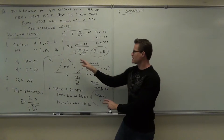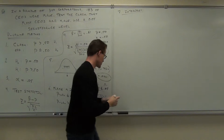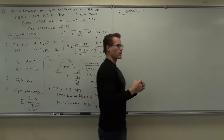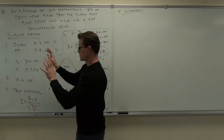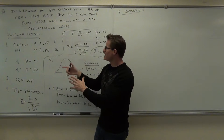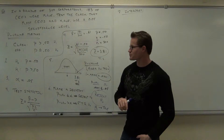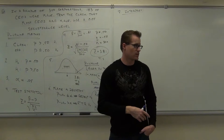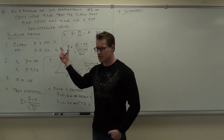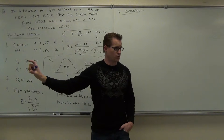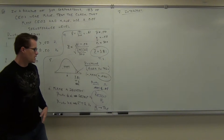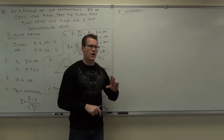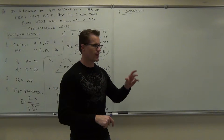It said you reject H sub 0. Rejecting H sub 0 means H sub 1 is true. Depending on where H sub 1 is, that means you proved your claim or your opposite. So we just proved our claim right here — if our claim is that most CEOs are male, we just proved that with statistics. If you reject H sub 0 and H sub 1 is listed as your claim, it says you have enough evidence to support the claim, and you restate your claim.